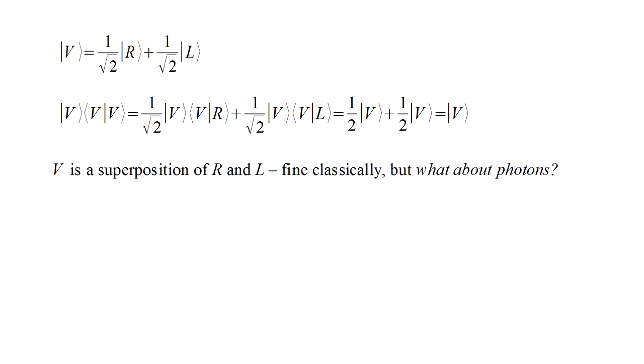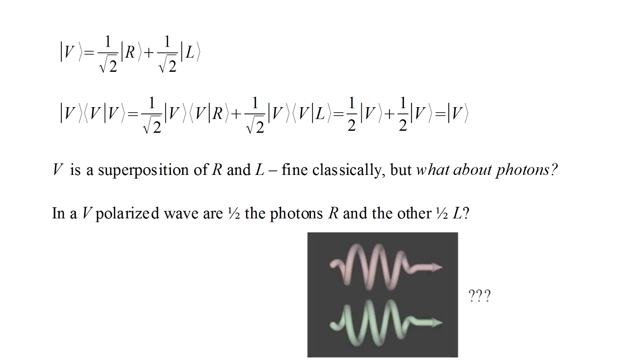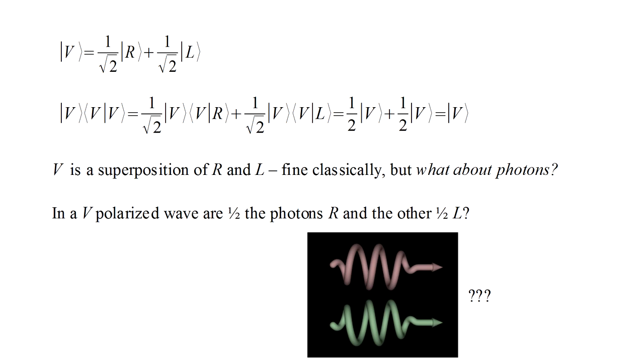We can indeed say that the v state is a superposition of the r and l states. And again this makes complete sense mathematically and classically. But again, what about photons? In a v polarized wave, are half the photons r polarized and the other half l polarized? Should we think of a vertically polarized wave as consisting of lots of photons, half in each of the two circular polarizations? If so, what happens if we just have a single photon? How would that correspond to a v polarized field?